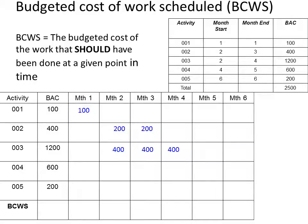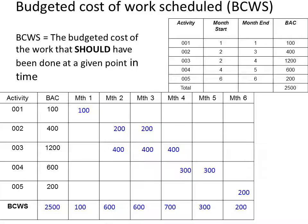Activity four has a lifespan of two months with a total budget allocation of $600,000, loaded accordingly in the table. Activity five has a duration of one month with total spending of $200,000. We have now completed the budgeted cost of work schedule table based on the initial cost plan. In the last row, we calculate the cumulative value by adding all values in each column. For example, month one shows $100,000 and month two shows $600,000 cumulative.